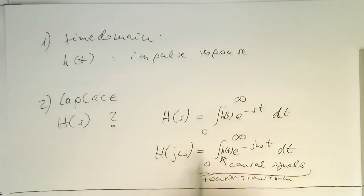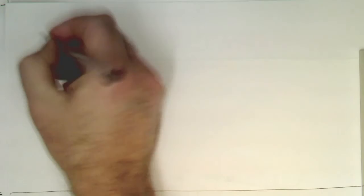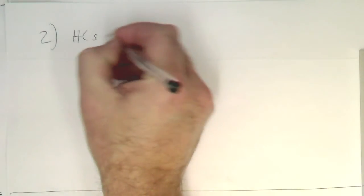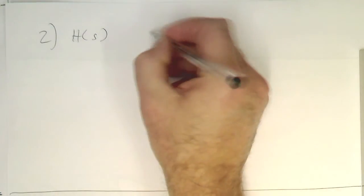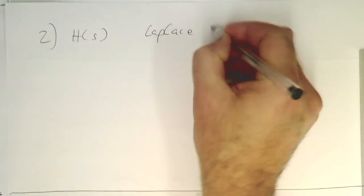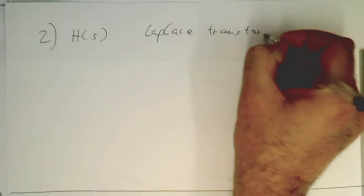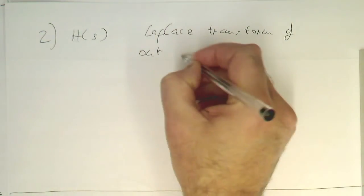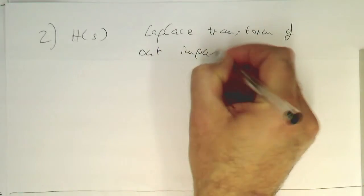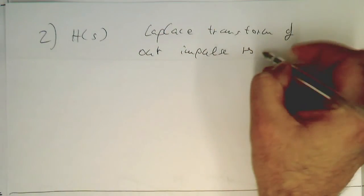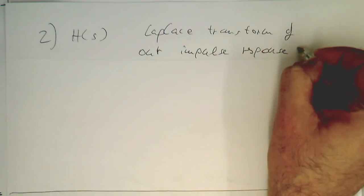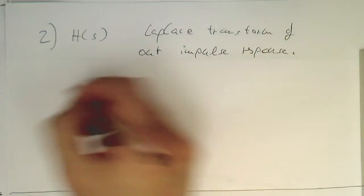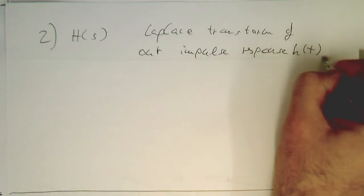In other words, if we are putting the j omega in there, we should be getting a spectrum out there, or a frequency distribution. We've got this H of s. This is our Laplace transform of our impulse response H of t.